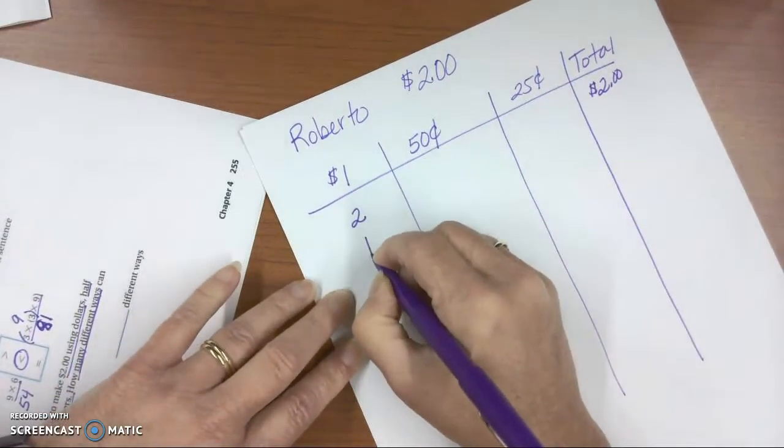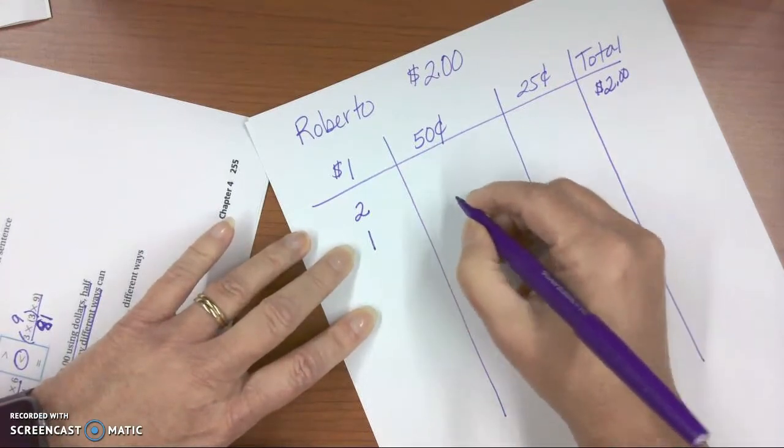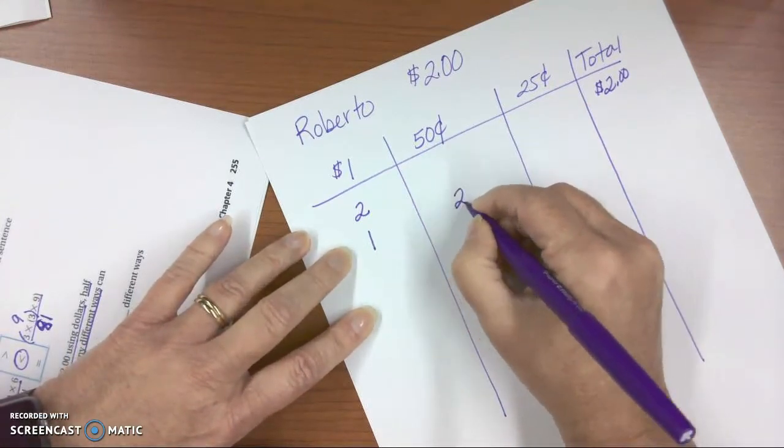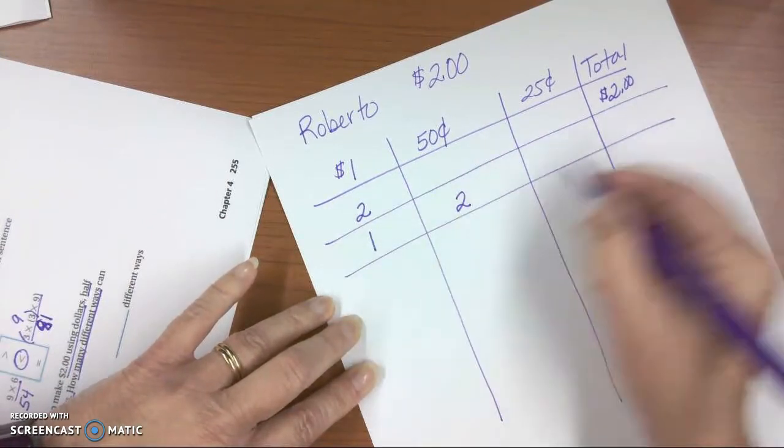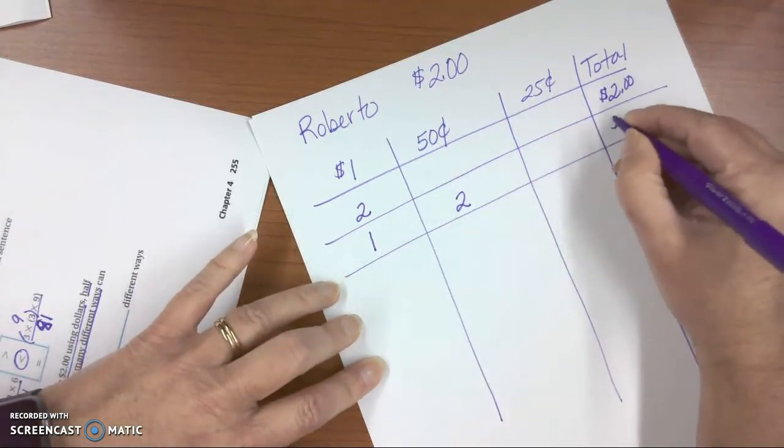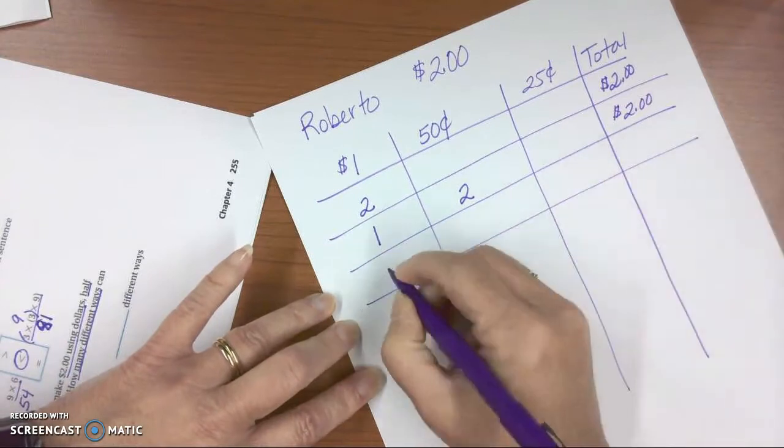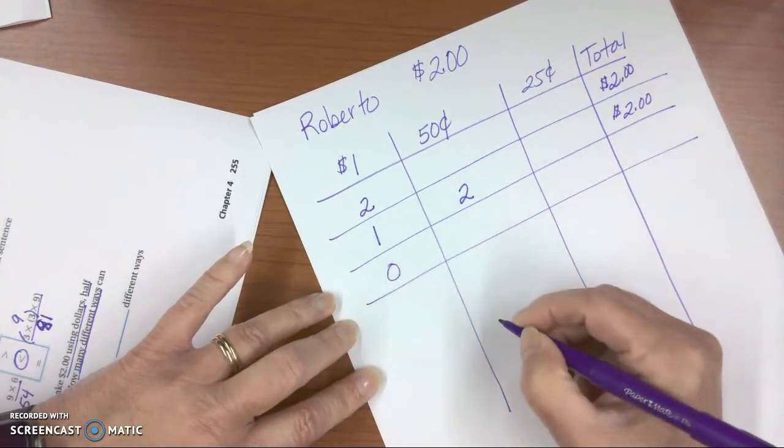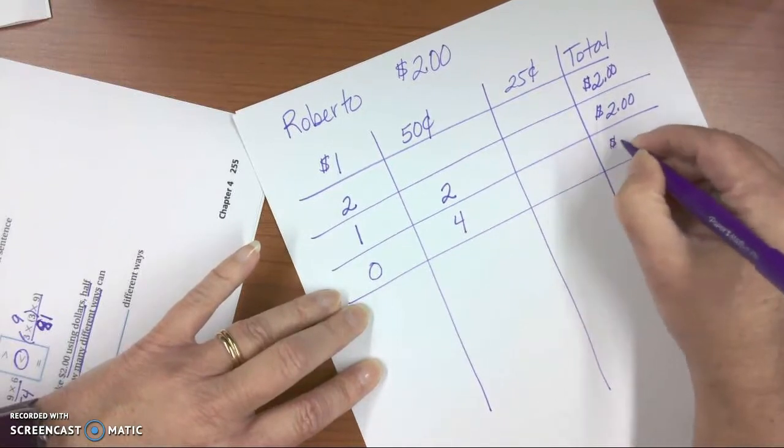All right, so what if he used one $1 bill? If he used one $1 bill, that's a dollar, and he used two 50-cent pieces, two 50-cent pieces equals a dollar, so he has $2. Okay, what if he doesn't use any dollar bills? Well, then he could use four 50-cent pieces, and he would have $2.